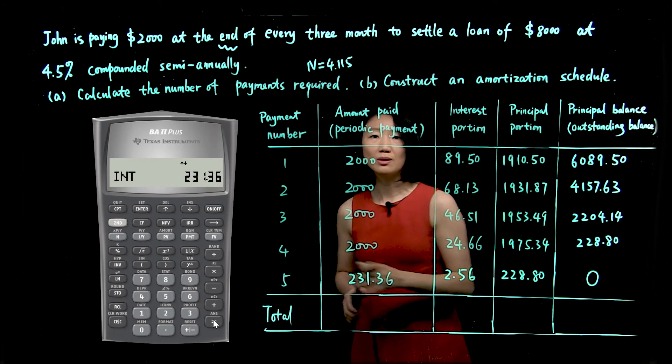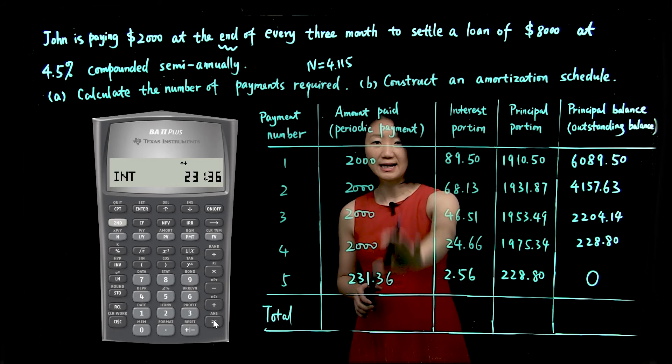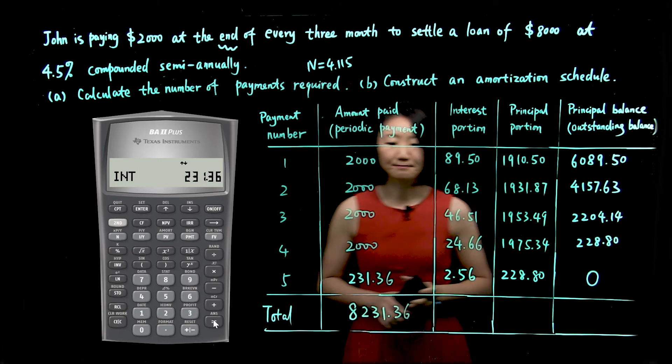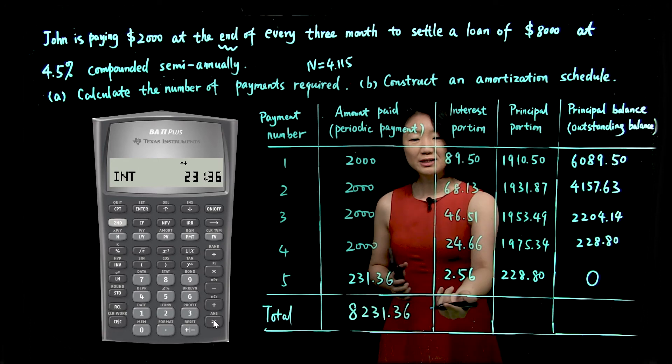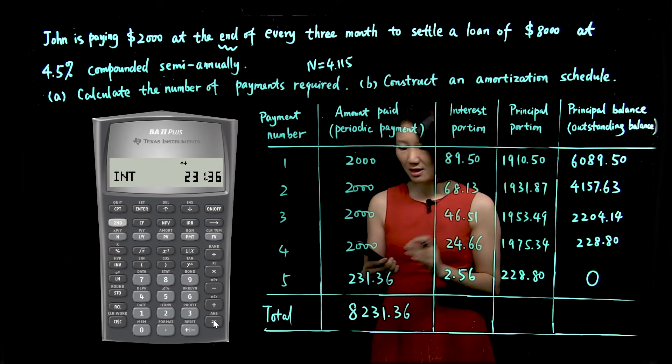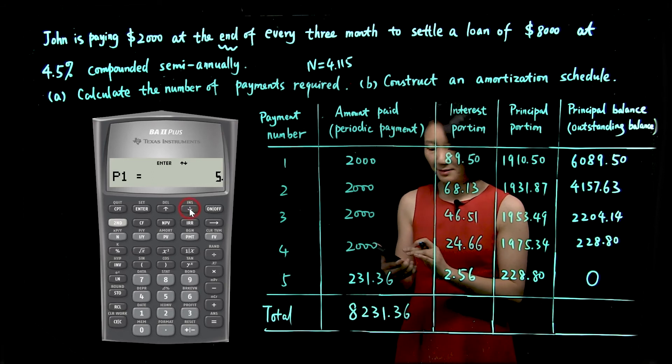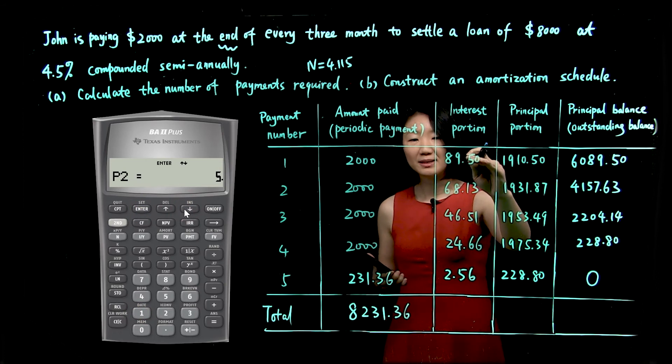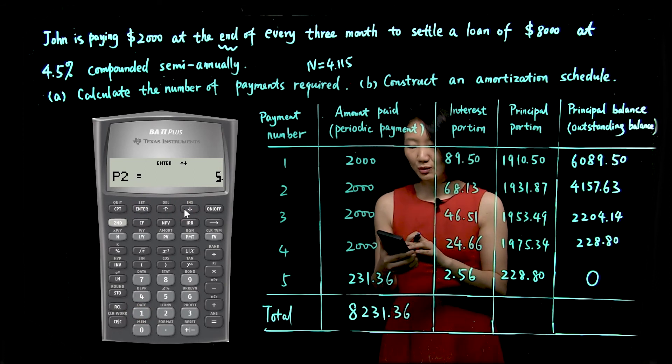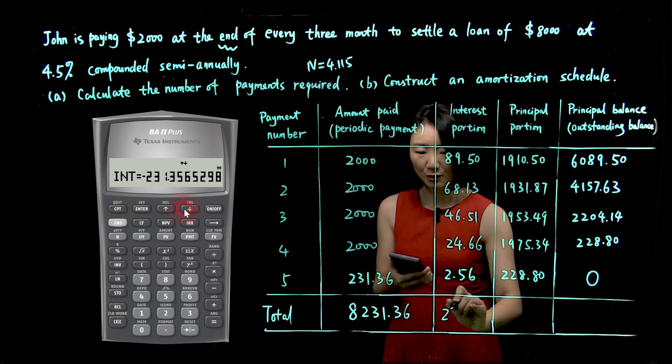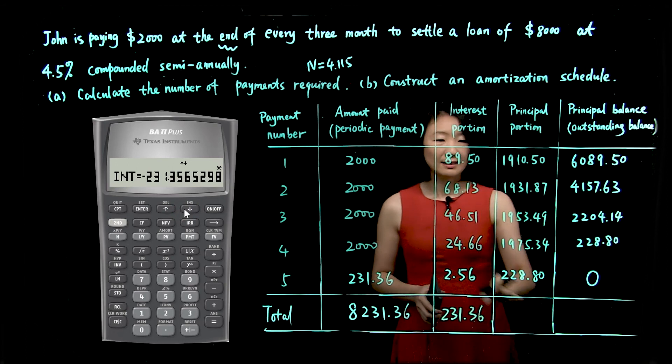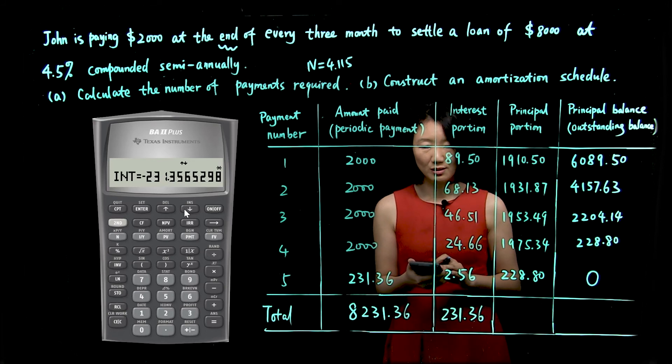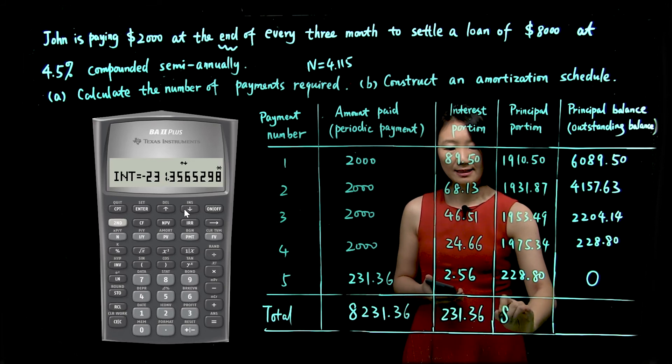We are going to look at total. So total amount paid for John, we can add them up. We will have $8,231.36. Now you may use your calculator to calculate this interest portion. I'll show you how. You go to P1. P1 is 1 this time. P2 is 5. Because that means from the first payment to the fifth payment, you go to interest directly. You see $231.36. And this one, principal portion, you will know it would be, add up, be $8,000. So now pay attention, this number is not from calculator. Because we know the loan is $8,000, and that's the principal you need to pay back, $8,000. You also see $8,000 plus $231.36 is the total payment John made. And it makes no sense to talk about the total for outstanding balance.